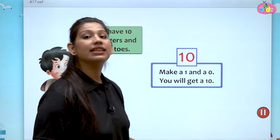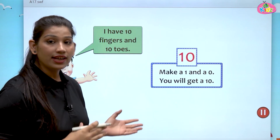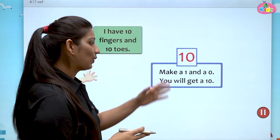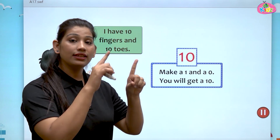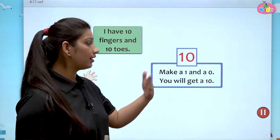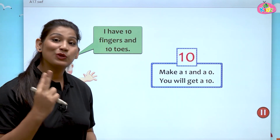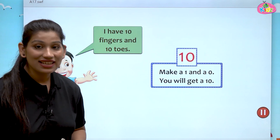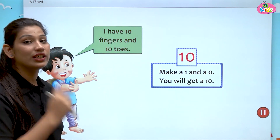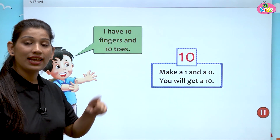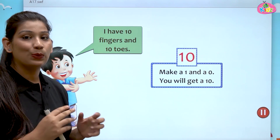To make a 10, first make a 1, then make a 0. 1 and 0 is number 10. 10 is a 2-digit number — you can see: 1 digit, 2 digit. Make a 1 and a 0 to get 10.